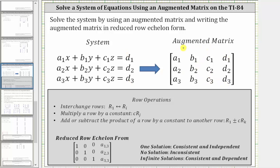Once we have the augmented matrix, we perform row operations to write the augmented matrix in reduced row echelon form. Row operations consist of interchanging rows, multiplying a row by a constant, as well as adding or subtracting the product of a row by a constant to another row.